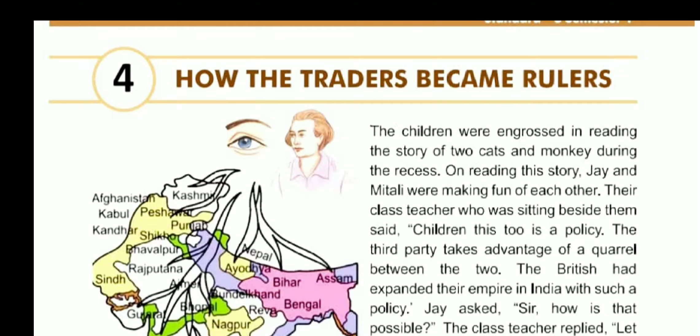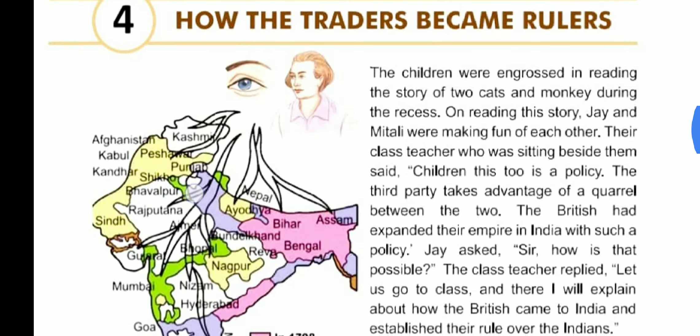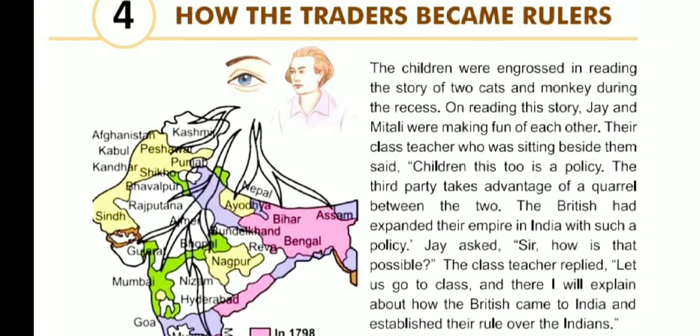During recess, children were engrossed in reading the story of two cats and a monkey. Jay and Mitali were making fun of each other while reading. Their class teacher, sitting beside them, said: 'Children, this too is a policy — the third party takes advantage of a quarrel between two.' Jay asked how the British expanded their empire in India with such a policy.